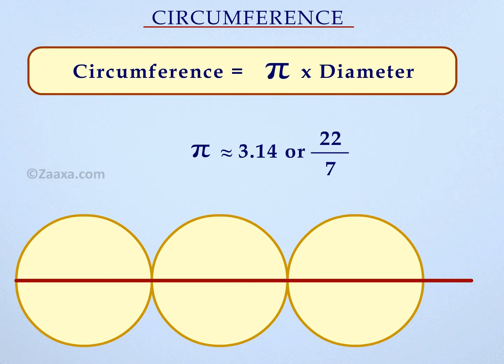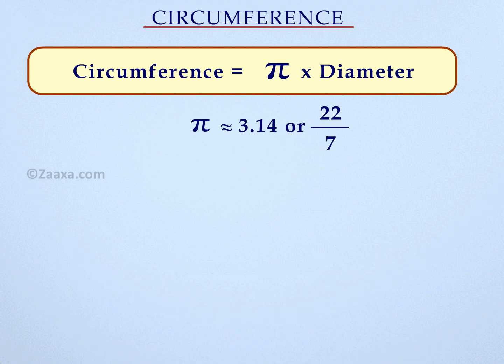So, if we know the diameter of a circle, we can easily find the circumference of that circle by multiplying it by 3.14 or 22 over 7.